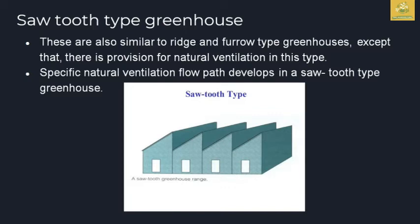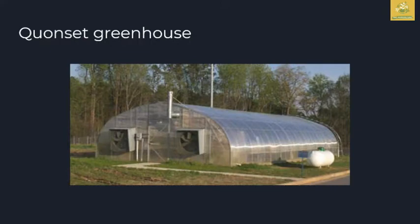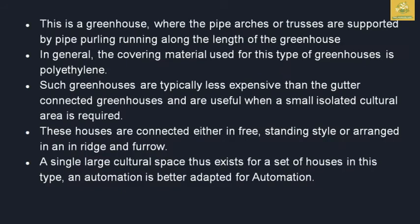The sawtooth greenhouse is similar to the rigid furrow type except that it provides natural ventilation. The specific natural ventilation flow pattern developed in a sawtooth greenhouse is its major advantage. The Quonset type greenhouse uses arched pipes and trusses supported by pipe purlins along the length; the covering material is typically polyethylene. These are less expensive than gutter-connected greenhouses and can be free-standing or arranged in a ridge and furrow configuration for a single large cultivated space.